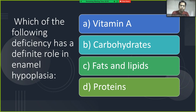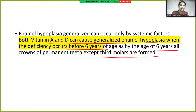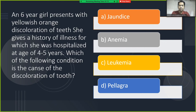Which deficiency has a definite role in enamel hypoplasia? Vitamin A is related to keratinization, so the answer is vitamin A. Generalized enamel hypoplasia can occur from systemic factors — both vitamin A and D deficiency can cause it when the deficiency occurs before six years of age, by which time all permanent tooth crowns except third molars are formed.